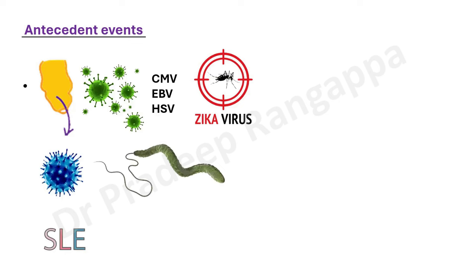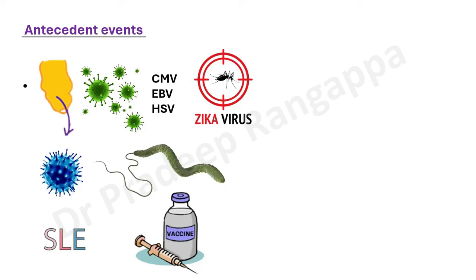Vasculitis like SLE can be a trigger for Guillain-Barre, and immunization/vaccines — in fact, we have reported one COVID immunization leading to a demyelinating process. Any immunization has a remote potential risk of this demyelinating process. So the commoner triggers are viral infections; among bacteria, keep Campylobacter jejuni in mind; and some autoimmune conditions like SLE and immunization.